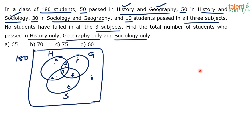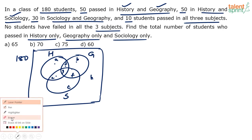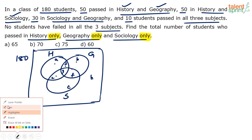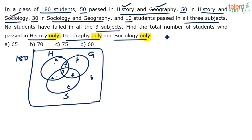The required answer is the total number of students who passed in History only, Geography only, and Sociology only. The number of students who passed in History is A+D+G+E; in Geography is B+D+G+F; in Sociology is C+F+G+E. But with the keyword 'only', History only is just A, Geography only is B, and Sociology only is C. So the required answer is A+B+C. The word 'only' plays a key role in set theory questions.